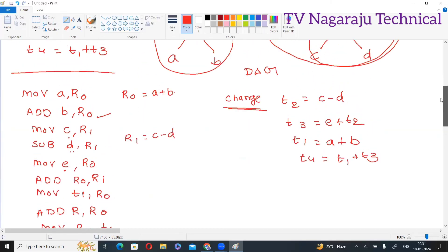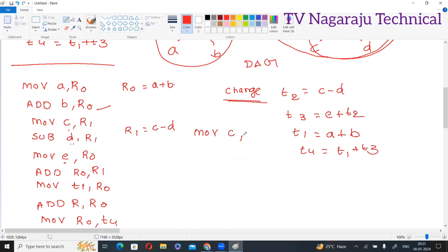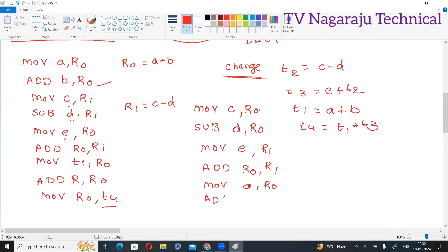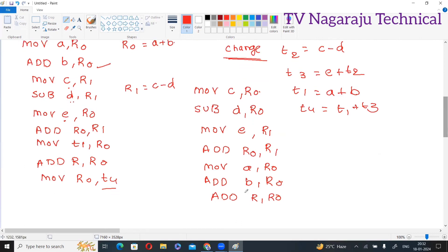Observe the code. Move c comma r0, then I am performing subtraction d comma r0. Next, move e comma r1. Add r0, which already consists of c minus d, r0 comma r1. Move a comma r0, then add b comma r0. Next, add r1 comma r0. Finally move r0 comma t4.